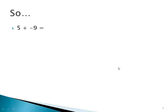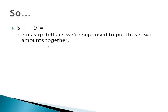If you're given a problem like 5 plus negative 9, in 4 steps you can get to the right answer. First step, what is it asking us to do? The plus sign tells us we're supposed to put these two amounts together.